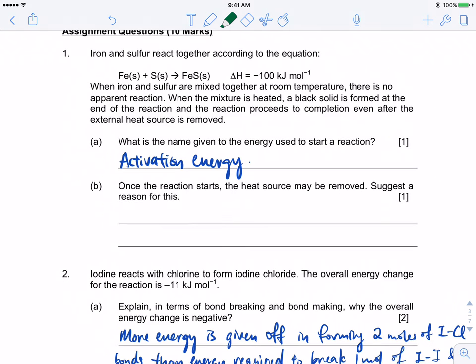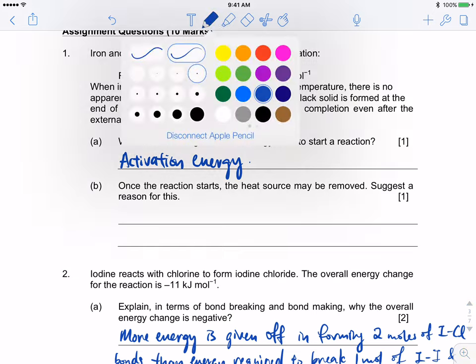Next, assignment question 1. Iron and sulfur react together with this equation. When they are at room temperature, no apparent reaction. When you heat it, you form a black solid that proceeds to completion even after the external heat source is removed. What is the name given to the energy used to start a reaction? This is actually your activation energy.